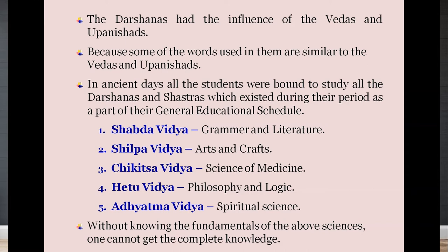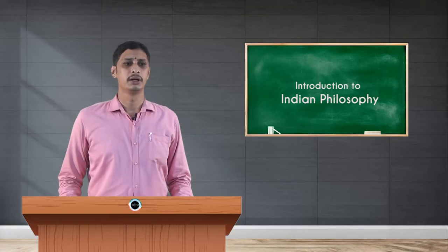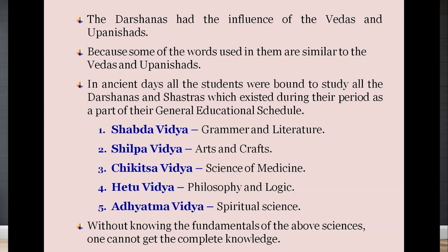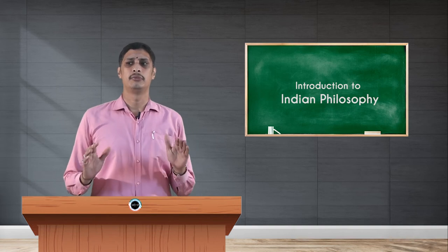The five educational values were: Shabda Vidya — grammar and literature, understanding Vyakarana; Shilpa Vidya — art and craft; Chikitsa Vidya — the science of medicine; Hetu Vidya — philosophy and logic; and Adhyatma Vidya — spiritual science. All five categories of educational values were focused upon.